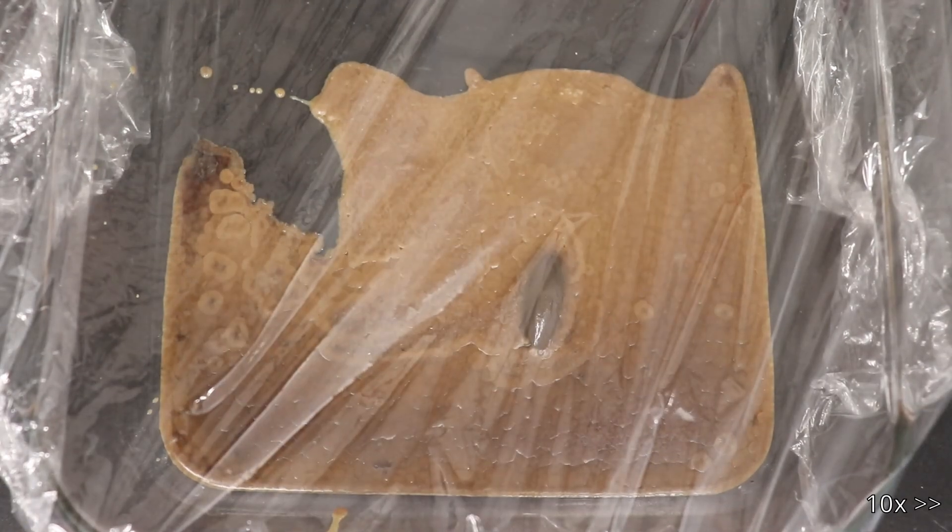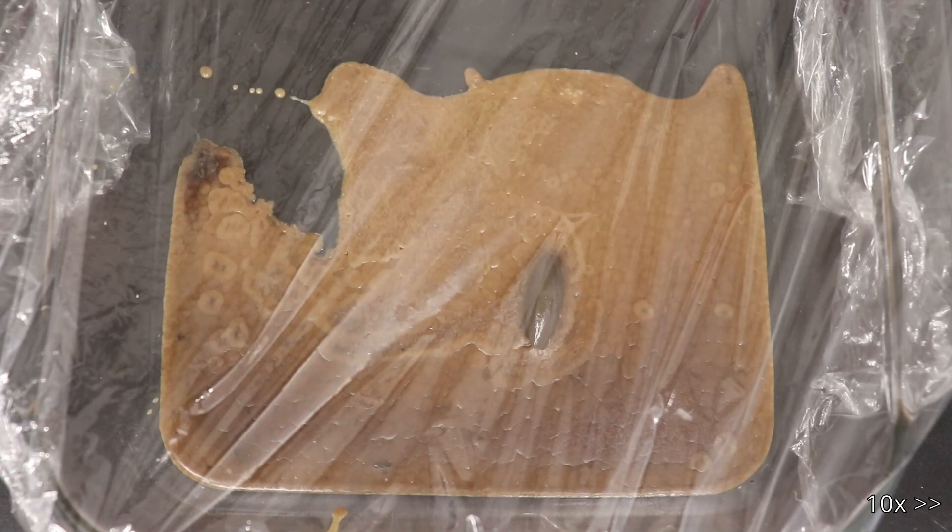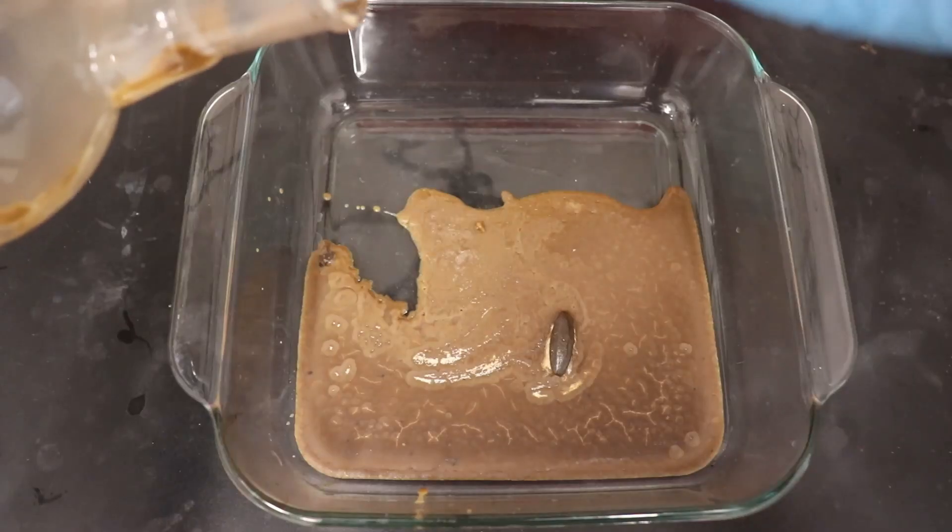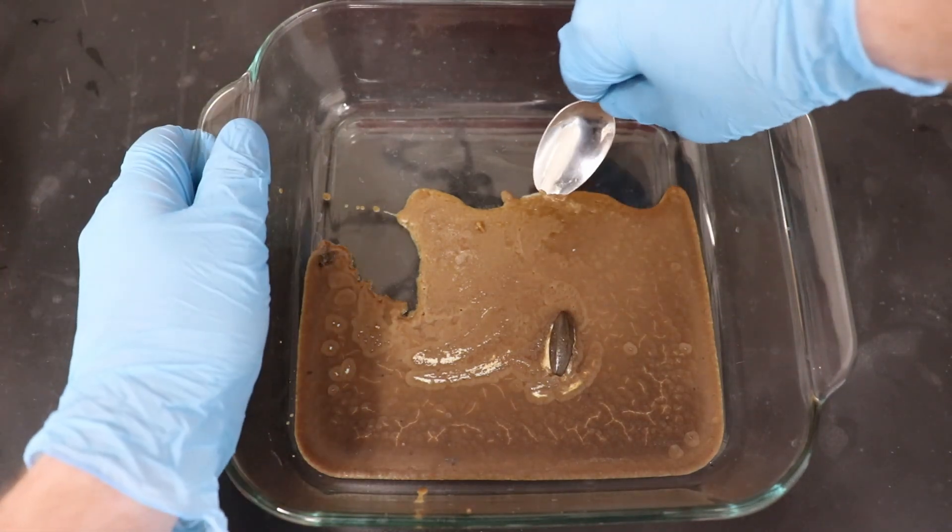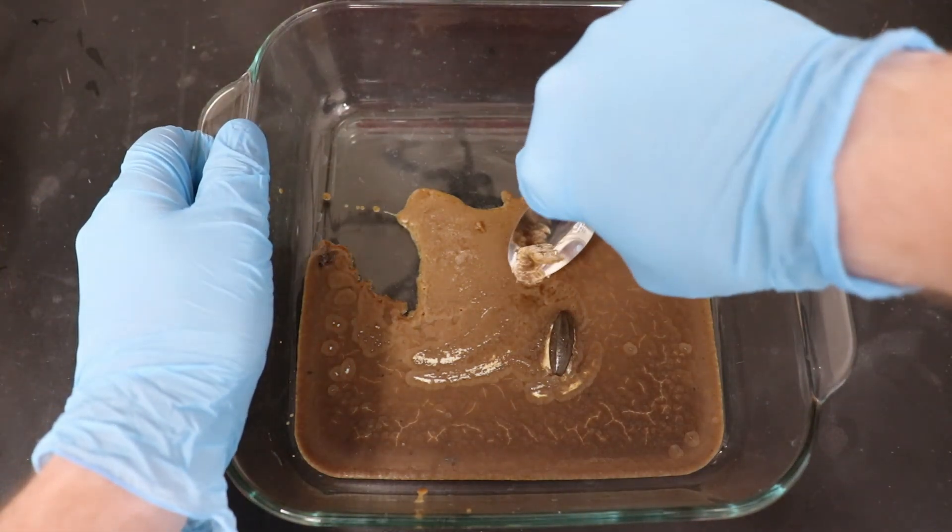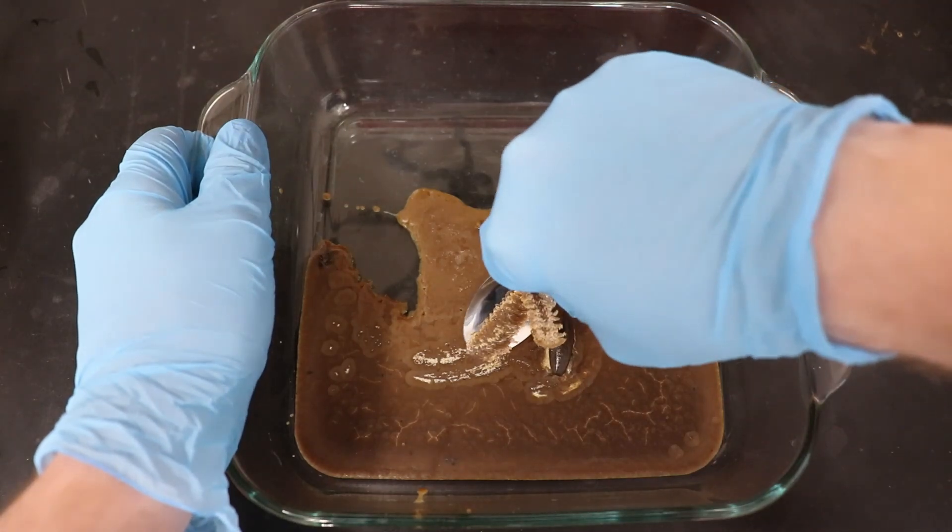Once cooled, the burnt-smelling caramel-like tar was scraped up into a blender to be mixed with 50 grams of calcium oxide. This mixing is slightly exothermic and forms a paste reeking of morpholine.